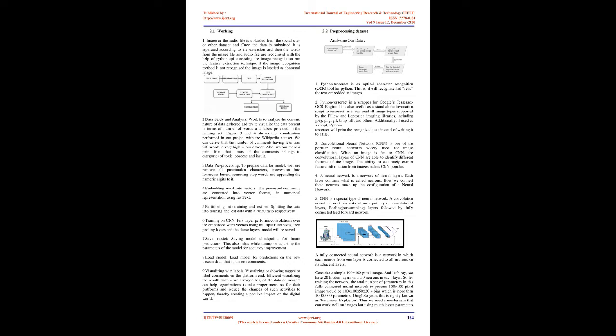One image or audio file is uploaded from the social sites or other dataset, and once the data is submitted it is separated according to the extension. Then the words from the image file and audio file are recognized with the help of a Python API consisting of the image recognition CNN using feature extraction technique. If the image recognition method does not recognize the image, it is labeled as abnormal. 2. Data study and analysis: work is to analyze the content and nature of data gathered and try to visualize the data present in terms of number of words and labels provided in the training set. Figures 3 and 4 show the visualization performed in our project with the Wikipedia dataset. We can derive that the number of comments having less than 200 words is very high in our dataset, and most of the comments belong to categories of toxic, obscene and insult.